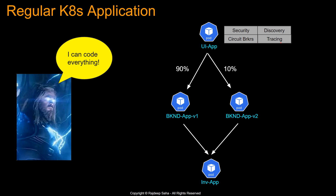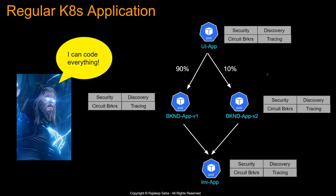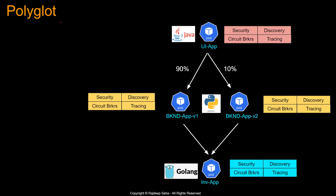Let's say you're a great coder and you started coding all of this into every application. In a real-world enterprise, each layer is maintained by different teams. Microservices can be written in different programming languages — that's what polyglot means. So your UI app might be written in Java, requiring security, discovery, circuit breaker, and tracing coded using the Java SDK. Your backend app may be in Python, requiring the same functionality using the Python SDK. Your inventory app in Golang needs it written in the Golang SDK. So it's a lot of coding.